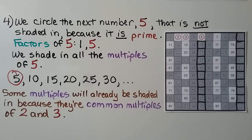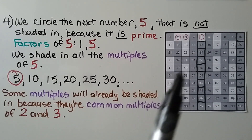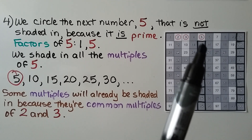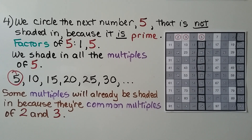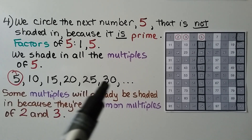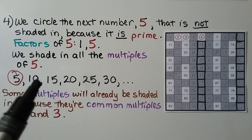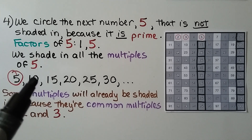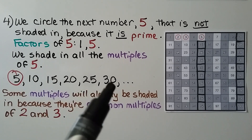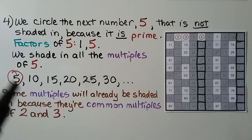Next, we circle the number 5, which is not shaded in because it is prime. The factors of 5 are 1 and 5. We shade in all the multiples of 5 — the 5 is circled and then we shade in the other multiples starting with 10, 15, 20, 25, 30. Don't shade in the 5; that one gets circled.